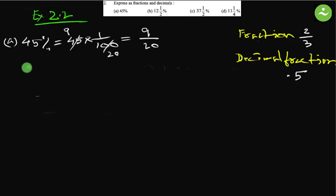Now as decimal: 45 percent means 45 by 100 equals to 45 means 45.0. So here is a decimal. We just have to shift two digits left. Why two digits? Because 100 has two zeros.